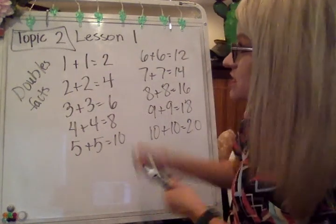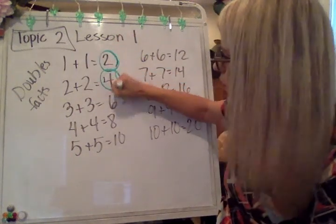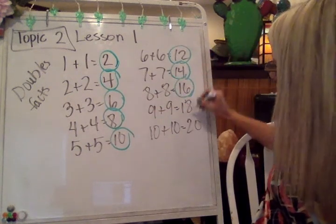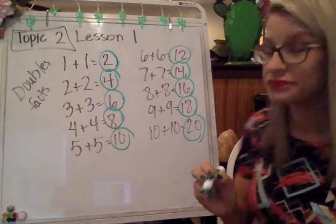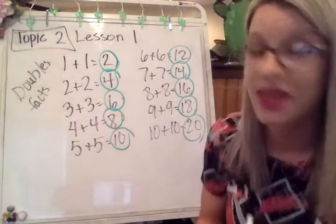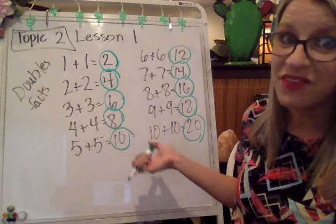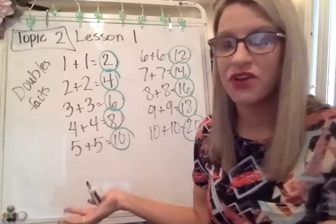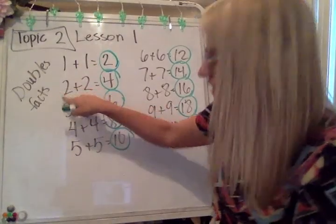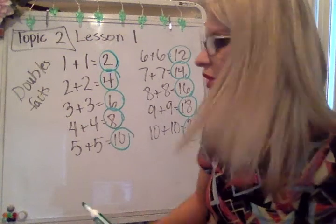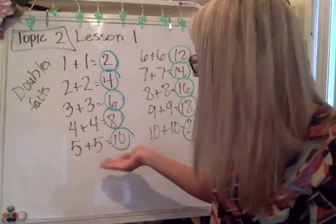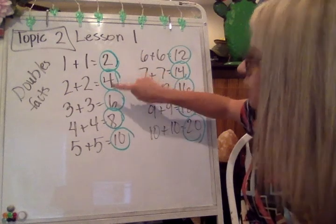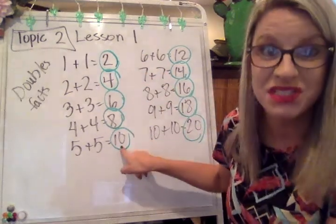Look closely at the sums here: two, four, six, eight, ten, twelve, fourteen, sixteen, eighteen, twenty. All of these doubles facts have a sum that is an even number. So if you're trying to decide if something is even or odd, think about if there is a related doubles fact that you know — that can help you. Something else you can notice about the doubles facts is that in the ones place, there's either a two, four, six, eight, or the number zero.